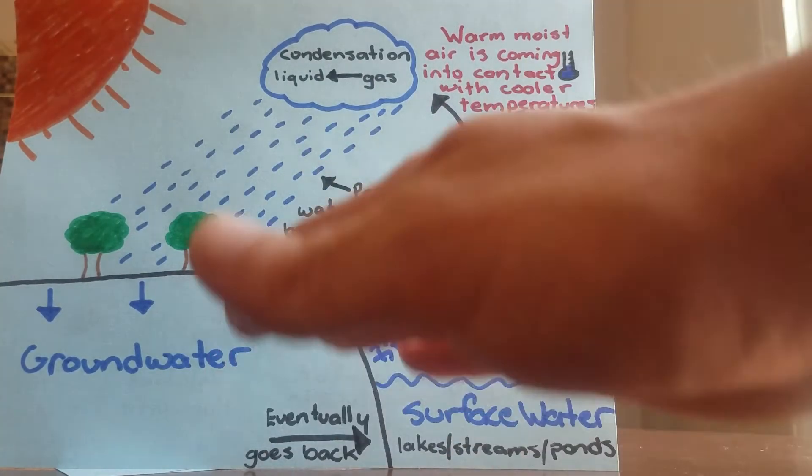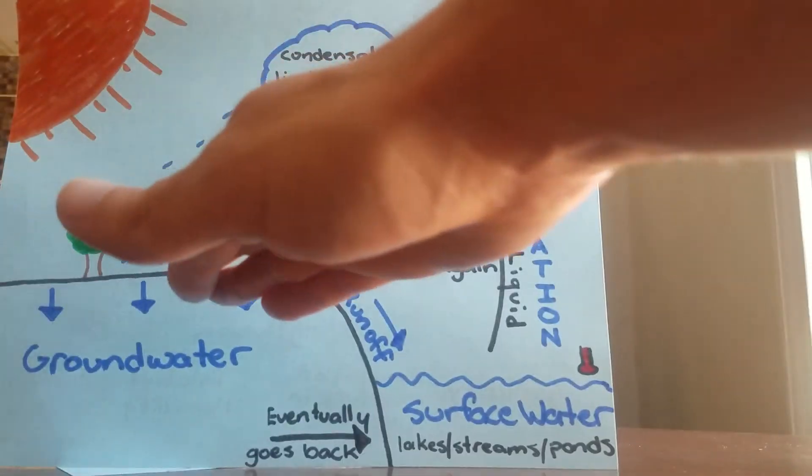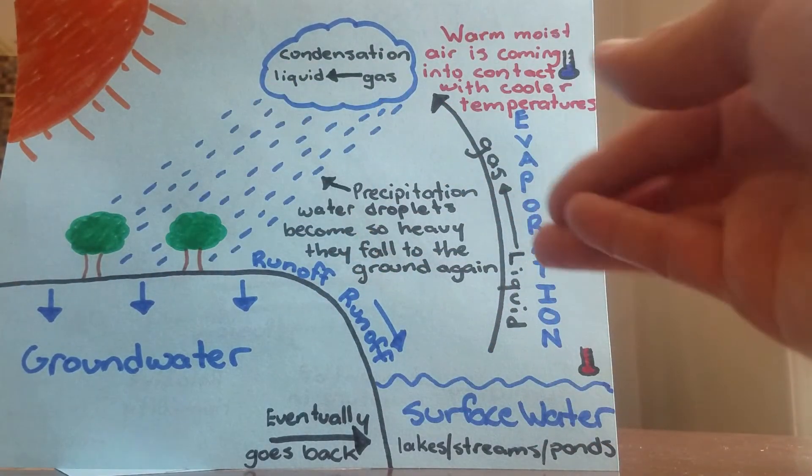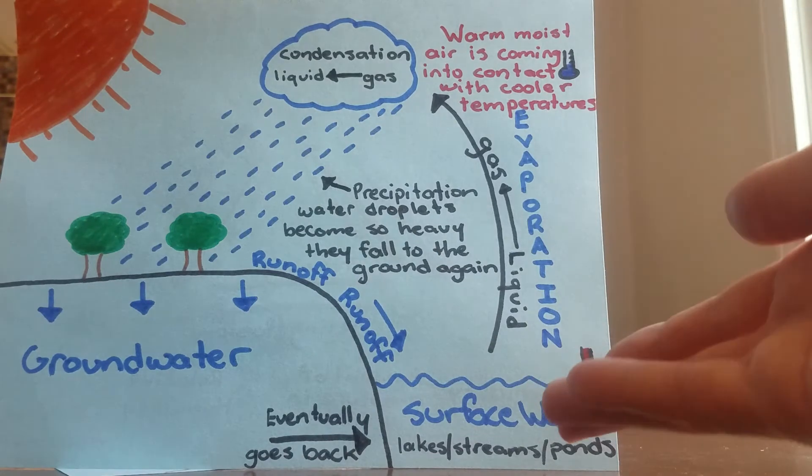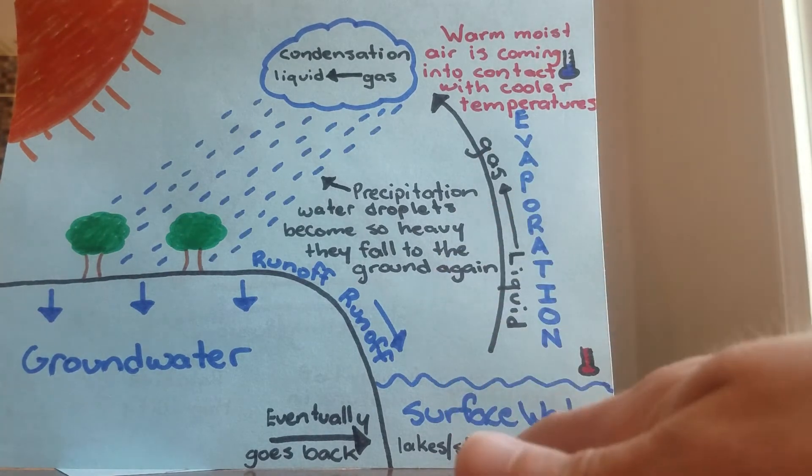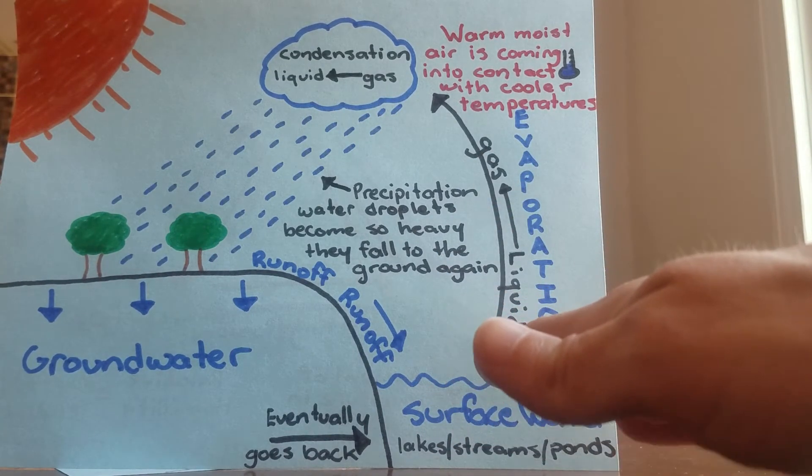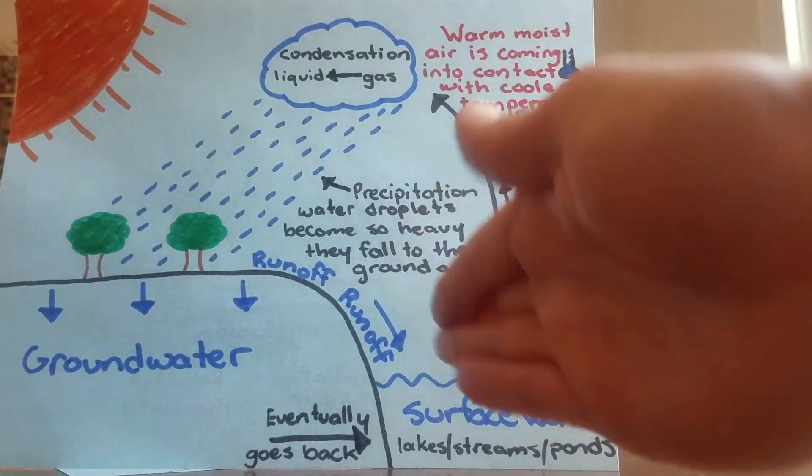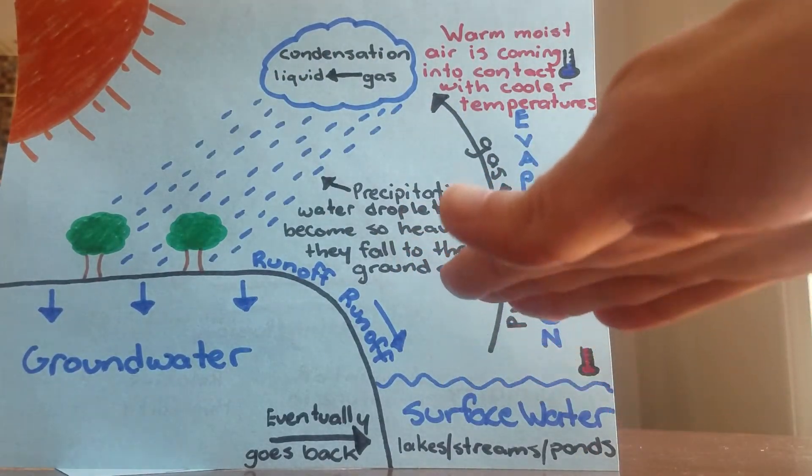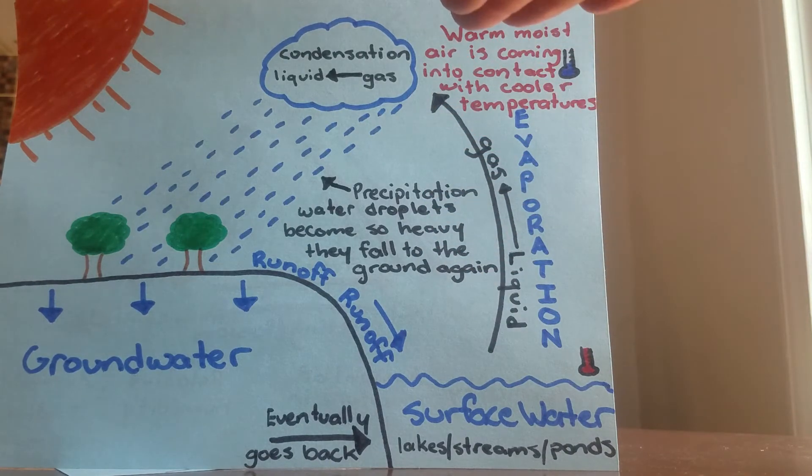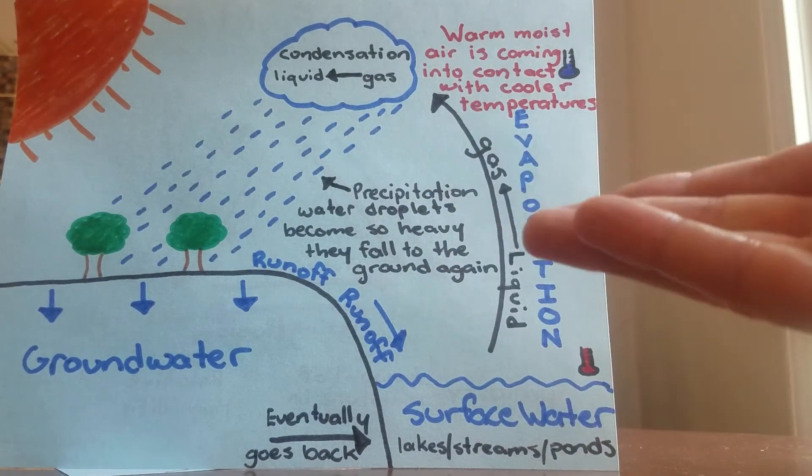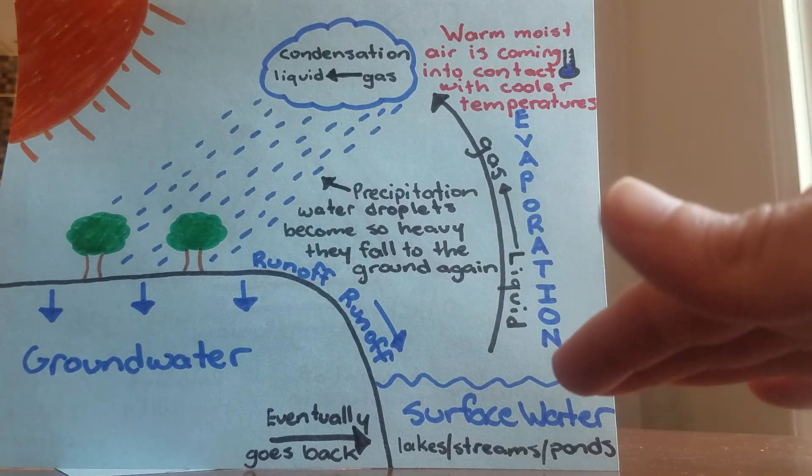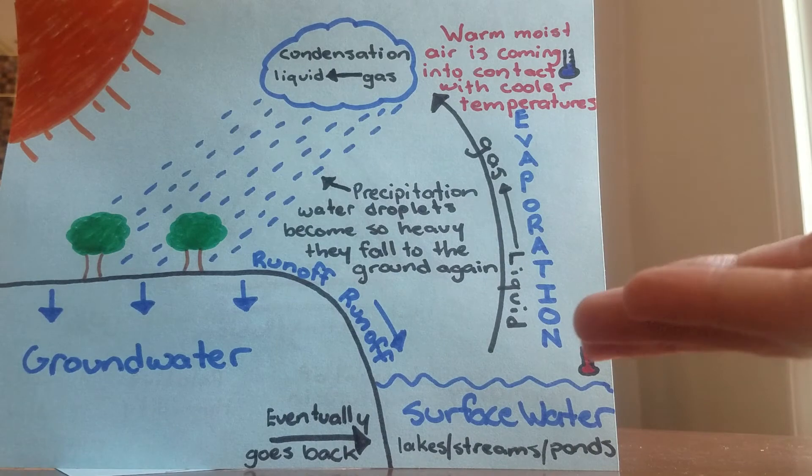Okay, the groundwater hangs out in things called aquifers for a while, significantly below the ground. So when that water congregates, it's going to come into contact with warmer temperatures, and we know what happens then—it's going to vaporize. So when that surface water hits warmer temperatures, it's going to be converted back into a gas. It's going to go high up into the sky.